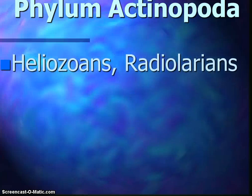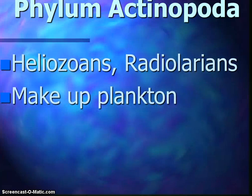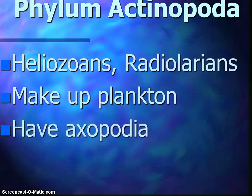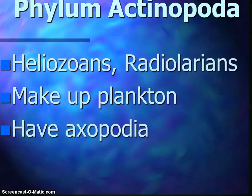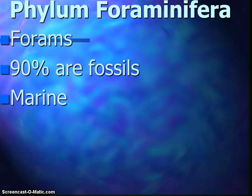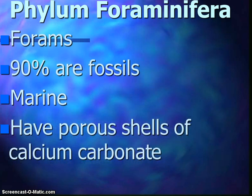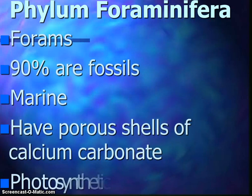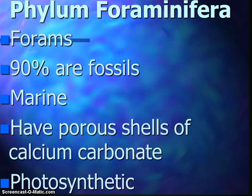Then we have the actinopods — the heliozoans and radiolarians — which typically make up the plankton. They have axopods as a way to move. Actinopods means 'ray feet,' and they are spherically symmetrical. The axiopods are slender, radiating pseudopods that radiate out, used to feed and move. The forams are 90% fossils, found in rocks and marine sediment. They lived in sand or attached to rock or algae, and they have porous shells of calcium carbonate — an important component of marine sediment. They were photosynthetic, derived from symbiotic algae beneath the shells, and they feed and move with slender, interconnected pseudopods that are spirally arranged.